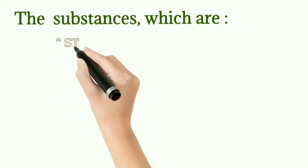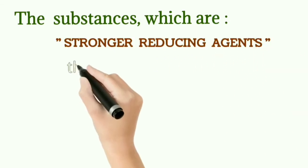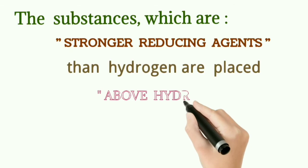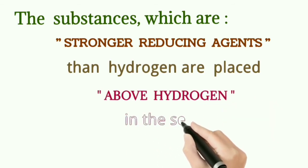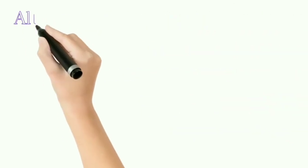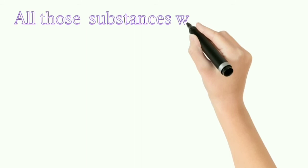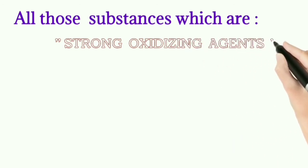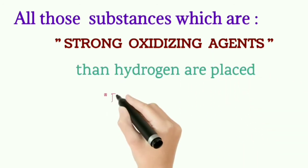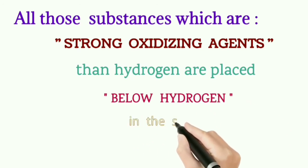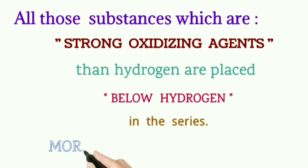Potassium and all active metals have negative E° values. The standard hydrogen value is 0, and below that we have positive values. Substances which are stronger reducing agents than hydrogen are placed above hydrogen and have a negative value of standard reduction potential. Substances with positive E° values are strong oxidizing agents placed below hydrogen.